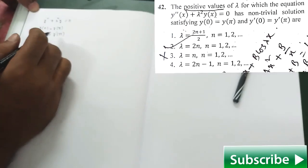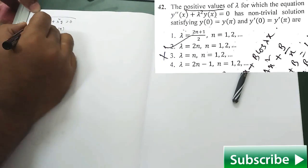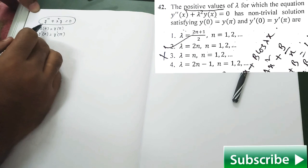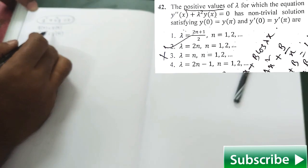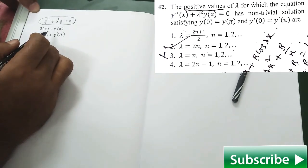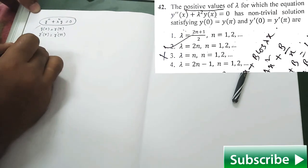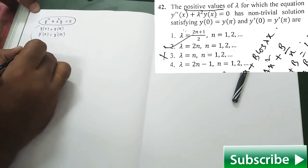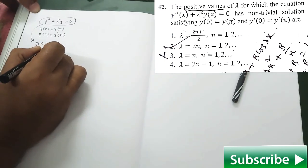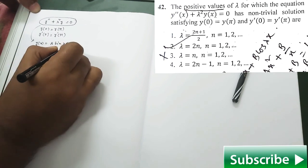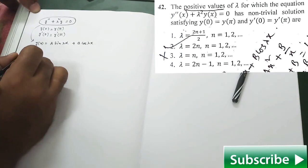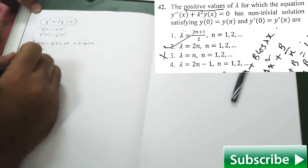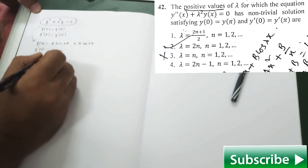Now let us solve the second question, where a second order linear differential equation is given along with two boundary conditions, and they are asking about the eigenvalues of that differential equation. The general solution of that equation is y(x) equal to A·sin(λx) + B·cos(λx). Now find y′(x) equal to λA·cos(λx) minus λB·sin(λx).